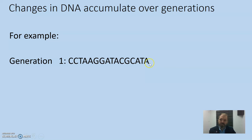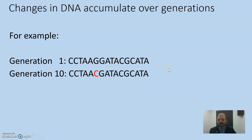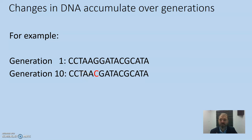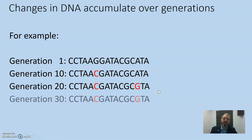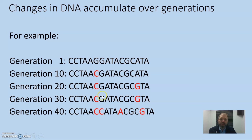Take a very short segment of DNA: in generation one it might look a certain way, but somewhere between generation one and ten a mutation arises — a change from a G to a C in the sequence. All offspring and downstream individuals from this point would inherit that change. Perhaps by generation 20 a new mutation arises, and again all offspring inherit that new change. As each change is introduced across generations it gets incorporated into the DNA.